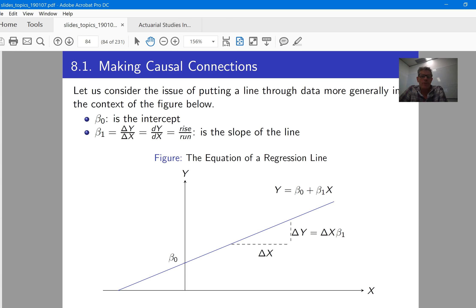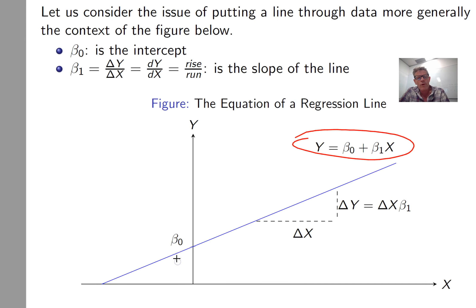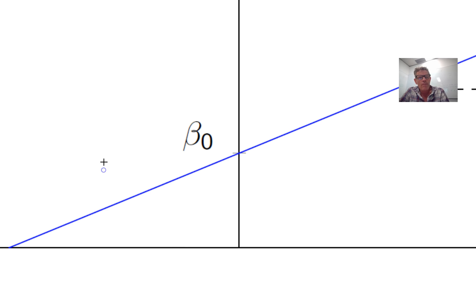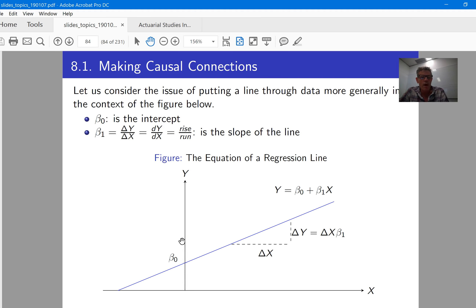Where does it come from? Well, it comes from the idea of the equation of a line, which you've come across in math study before, I'm sure. So let me just remind you of a few things. The equation for a line is given by this expression right here, and it's got two components. The first component is what we refer to as beta 0 — that's the intercept. And visually that's the point at which we cross the y-axis, so when x equals 0, what value does y actually take?